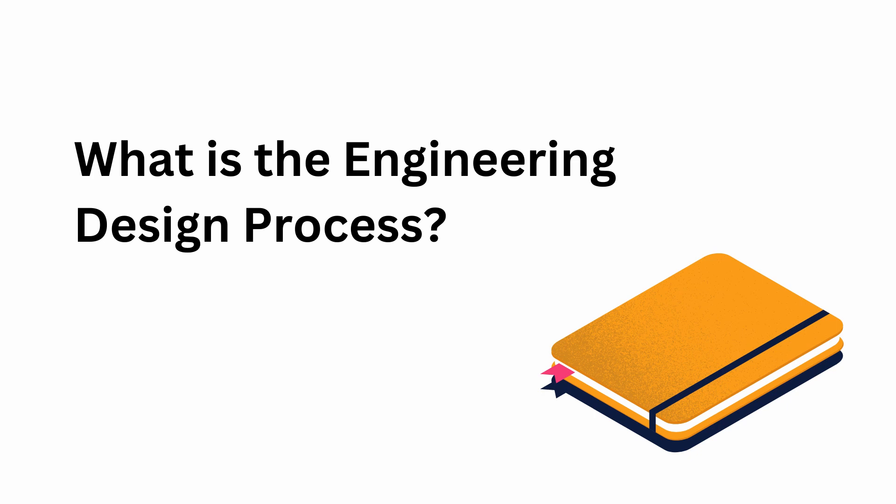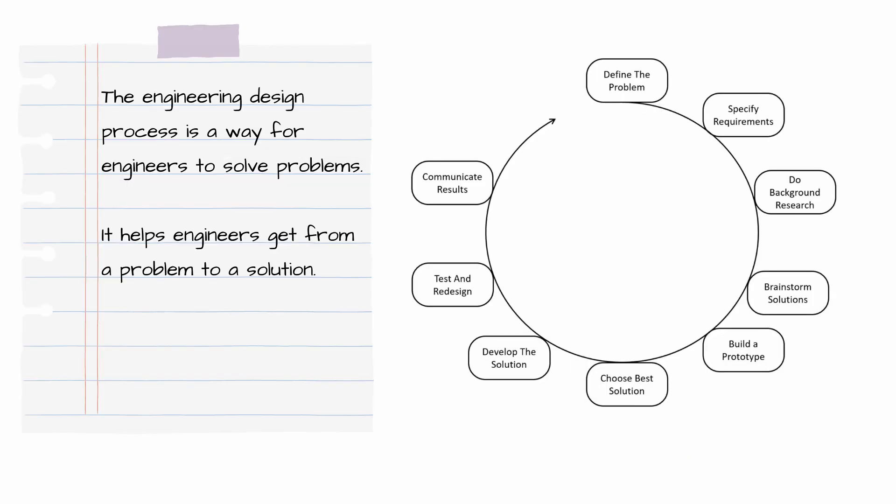What is the engineering design process? The engineering design process is a series of steps engineers use to solve problems. It helps engineers get from a problem to a solution. It's super important at VEX, just like it is in the industry. What you're going to do with this is follow the steps and document your progress, and that's going to help you get from the game reveal to an actual solution in the form of a robot.